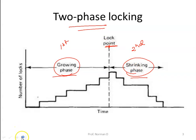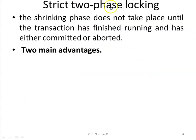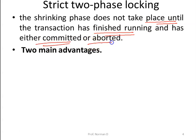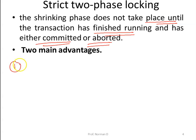What is strict two-phase locking? In the strict two-phase locking mechanism, the shrinking phase will not take place until the transaction has finished running and has either committed or aborted. This does not happen in standard two-phase locking but does take place in strict two-phase locking. The first advantage is that a transaction always reads a value that was written by a committed transaction.